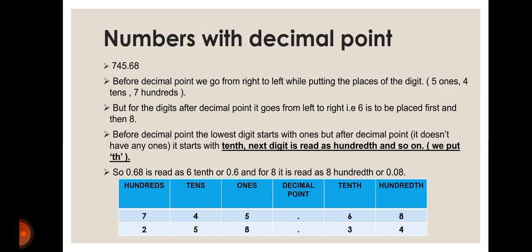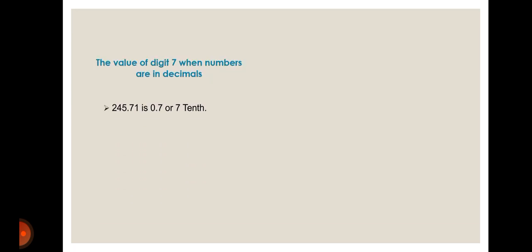I hope viewers are clear with the place value chart for both whole numbers and decimal numbers. If you have any queries, share them in the comments below, and do subscribe to Smart Study with Shivani. Moving ahead — the value of digit seven in a decimal number: in 745.71, seven is immediately after the decimal point, so its value is 0.7 or seven tenths.